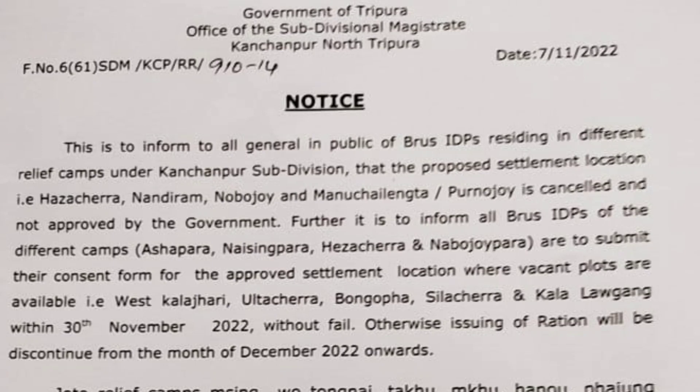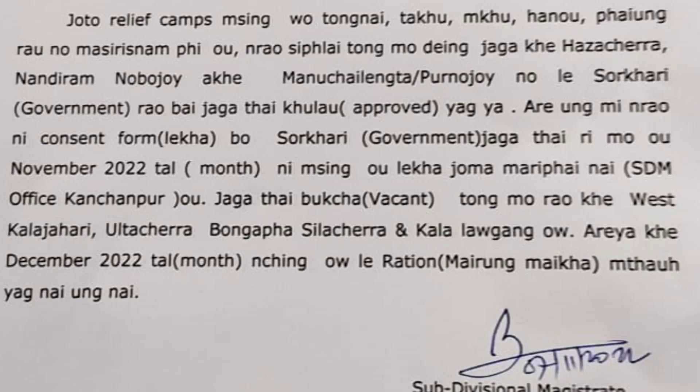Bode Kishwayao, Tawakaburubay. Zoto Relief Camp Singotong Naitakum Kuhanao Paiyong Roonoma System Repio Narawo Supply Tung Modei Jagake Hazar Chera, Nandirampara, Nabojoe, Ake, Monusulenta, Purnojoe — Nolesor Kari Government Raubay Jagatay.